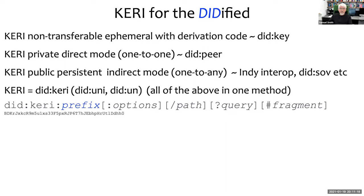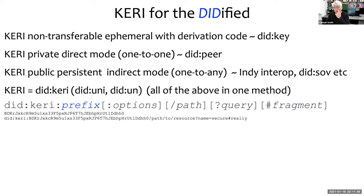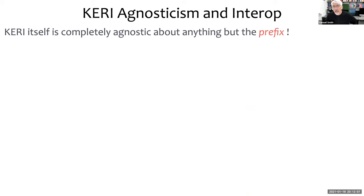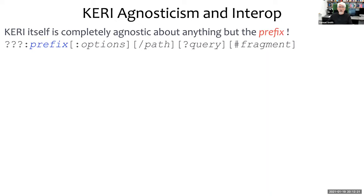The important part of KERI is not the namespace but what we call the prefix — the cryptographic string that is the method-specific ID in DID parlance. KERI proves control authority over that string. When that string is used in a namespace, it controls the whole namespace, but the same string can control multiple namespaces. You can use it in the DID namespace or any namespace you choose. The KERI protocol works the same regardless, because KERI doesn't see the namespace — it only sees the prefix. All events in KERI are focused on the prefix. Namespacing happens at a higher layer; KERI operates below that, completely agnostic about anything but the prefix.